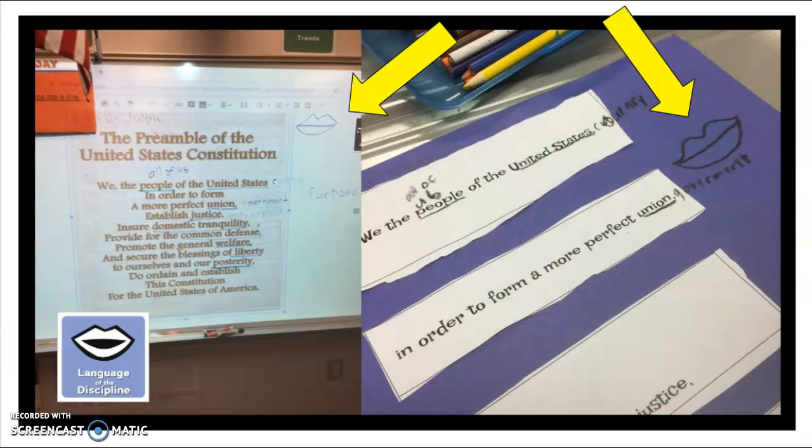But I like what this teacher did here. As they were studying the preamble of the United States Constitution, instead of just simply reading it and then asking questions, she actually had the students break the preamble up and focus on the words, focus on the verbiage, focus on the terminology. So she had the icon there.